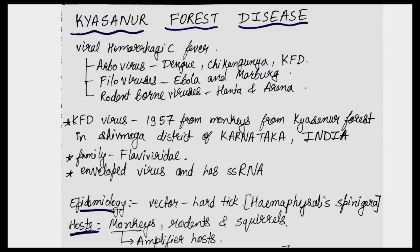Starting with a basic introduction: viral hemorrhagic fever is caused by viruses like Arboviruses — that is Dengue, Chikungunya, and KFD (Kyasanur Forest Disease). Another group is Flaviviruses, which includes Ebola and Marburg. Others are Rodent-borne viruses, that is Hantavirus and Arenavirus.